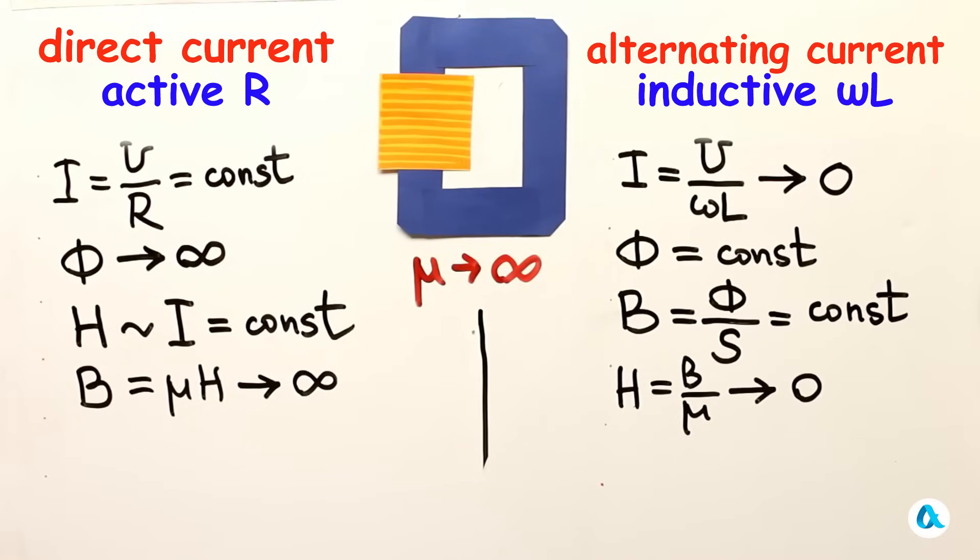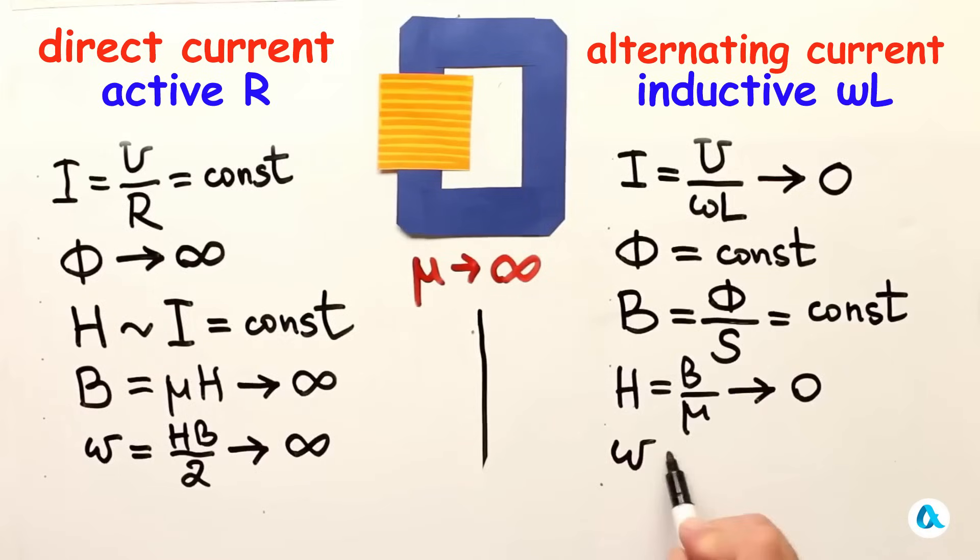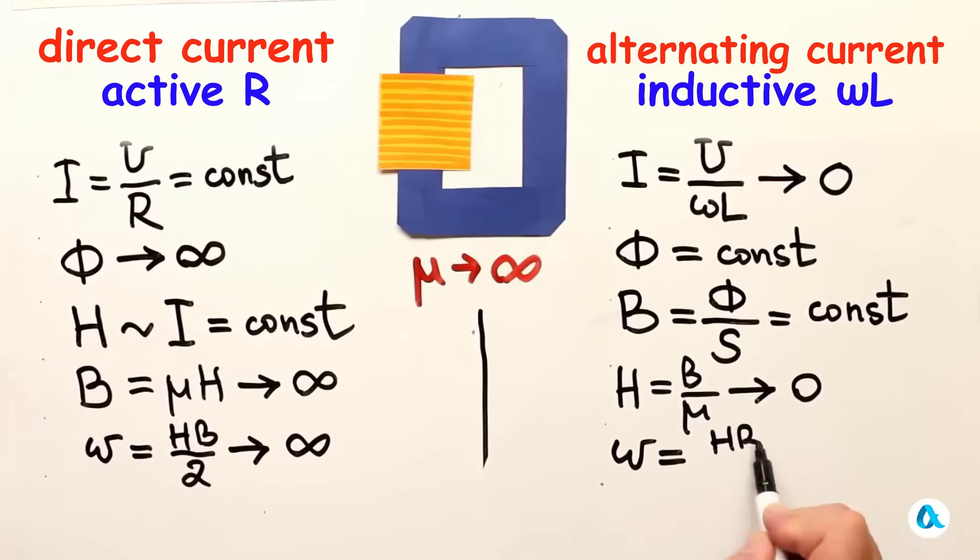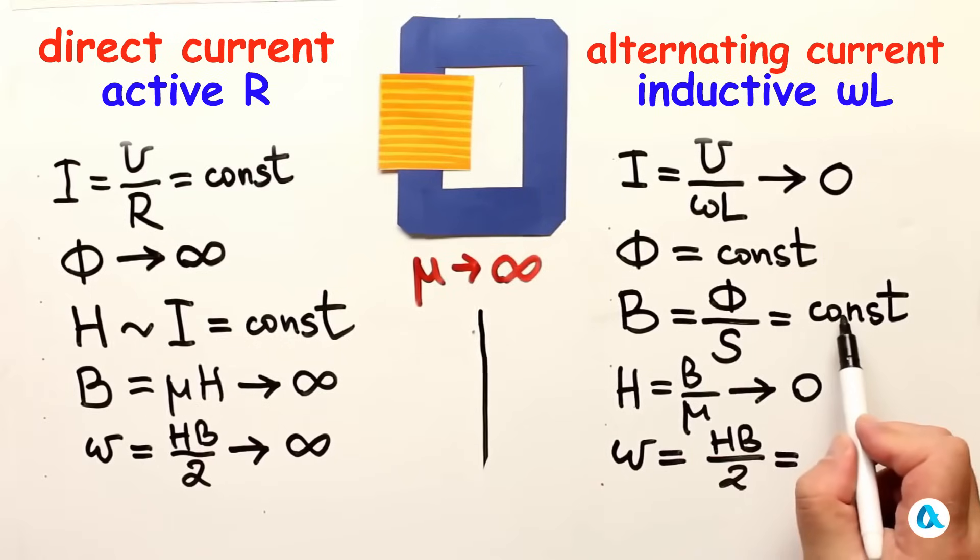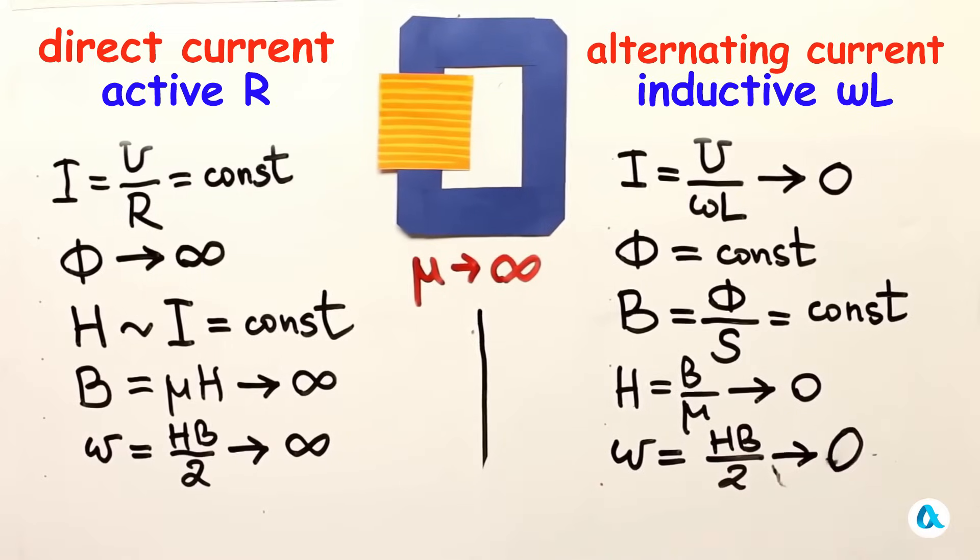And now we can write down the magnitude of the magnetic energy density inside the core for either case. Let's denote it as w small. It is H times B divided by 2, which does not change while B approaches infinity. Thus, the magnetic energy density in this case will tend to infinity. And here we have a completely different situation. The formula is of course the same, HB over 2. Now B does not change with the change in mu, while H approaches zero. So here, the density of magnetic energy approaches zero as mu approaches infinity.